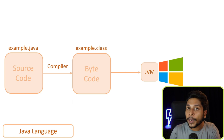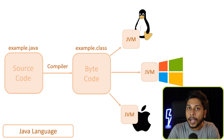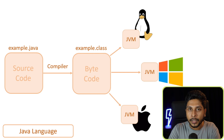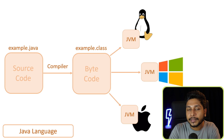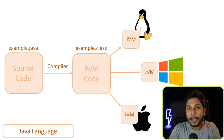We can run bytecode on our own operating system. If you want to run it, you can run it with Apple, Mac OS, Linux, or Solaris. If you want to run it with one operating system, you can compile it to bytecode. Install Java Virtual Machine — JVM — on that system, and you can execute by bytecode using the .class file.